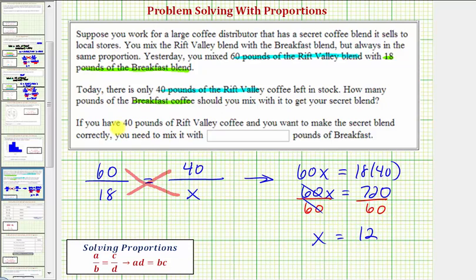Which means if you have 40 pounds of Rift Valley coffee and you want to make the secret blend correctly, you need to mix it with 12 pounds of the breakfast blend. I hope you found this helpful.